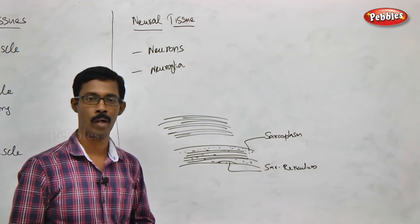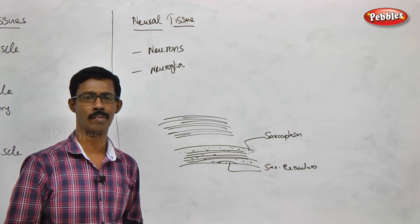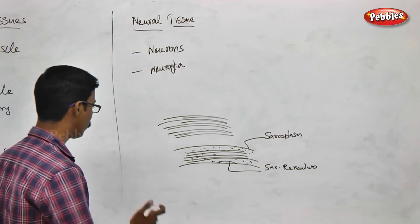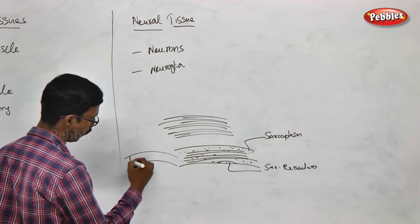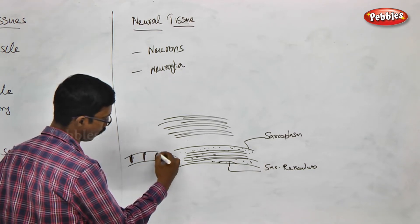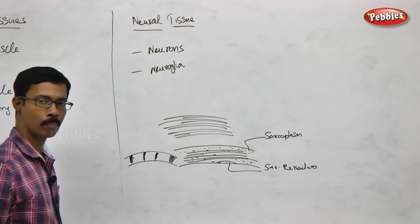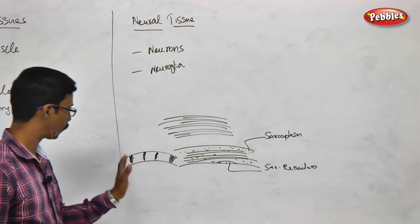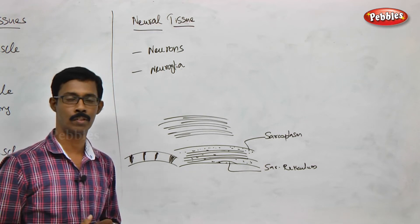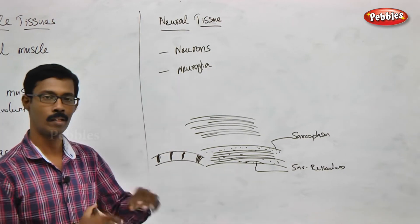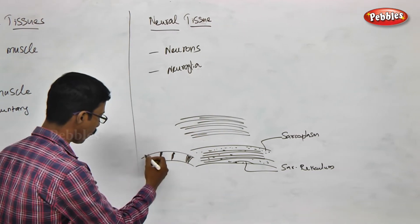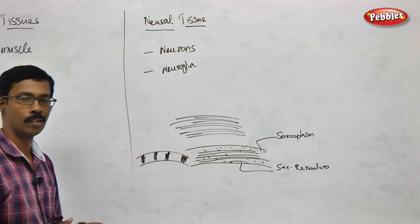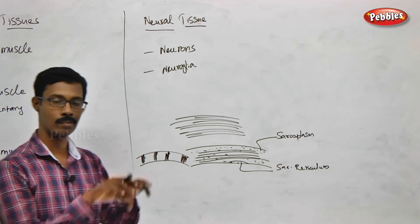The endoplasmic reticulum is called sarcoplasmic reticulum. There are myofibrils, and we will discuss the many proteins present in myofibrils. This fibril shows dark color bands and light color bands, giving a striated or striped appearance. This striated appearance is due to the arrangement of protein layers.